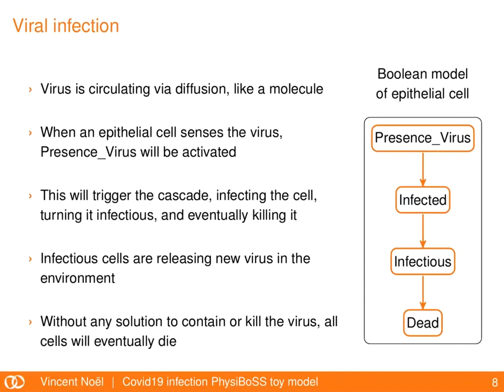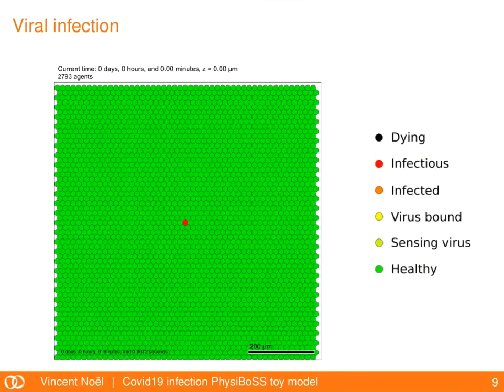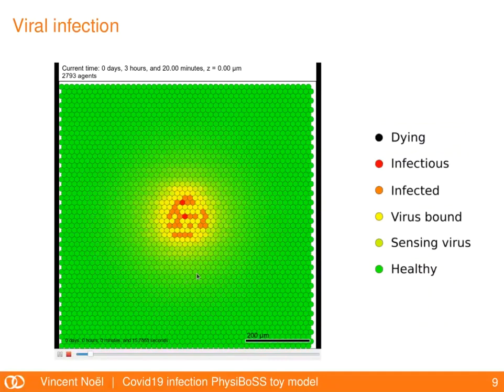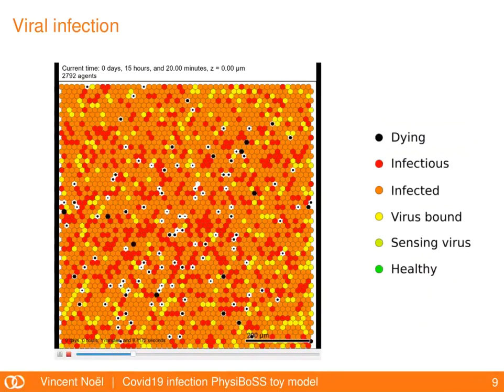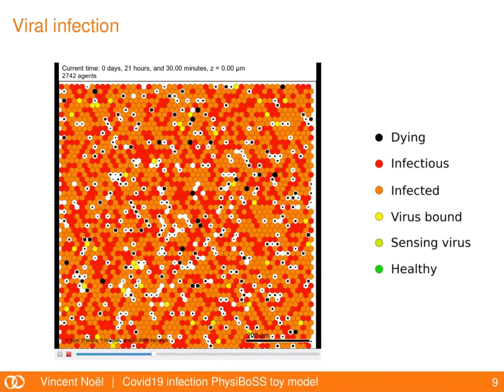I started with really basic things. We have a virus diffusing in the environment like a molecule, and we have a layer of epithelial cells. When an epithelial cell senses the virus — once it passes a threshold of concentration — a node of the Boolean model will be activated. This triggers a cascade which infects the cell, then turns it infectious, and eventually kills it. Infectious cells release new virus, and without any solution to contain it, all cells will eventually die — which is what we see in this video.